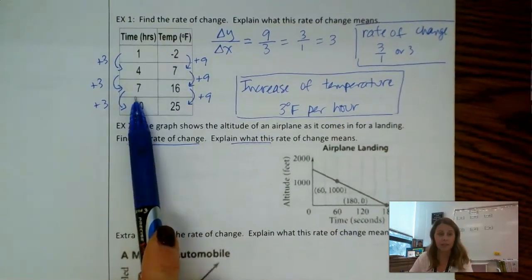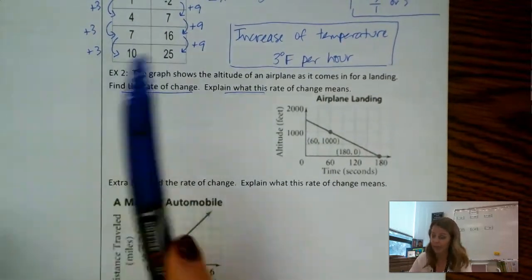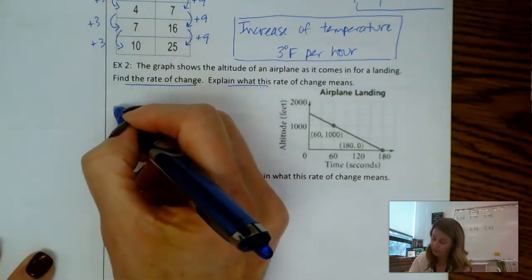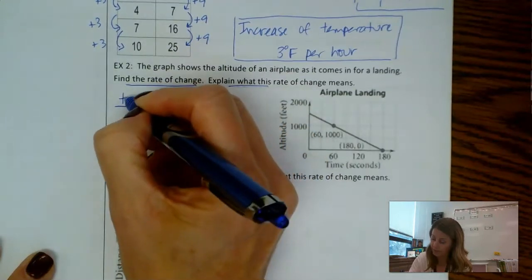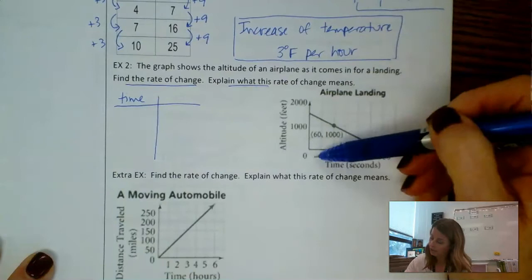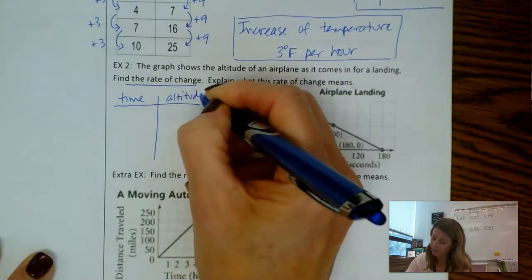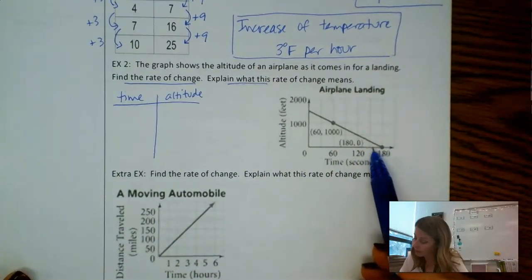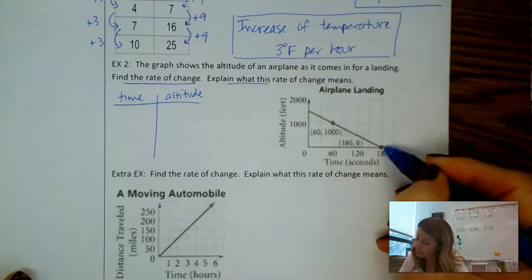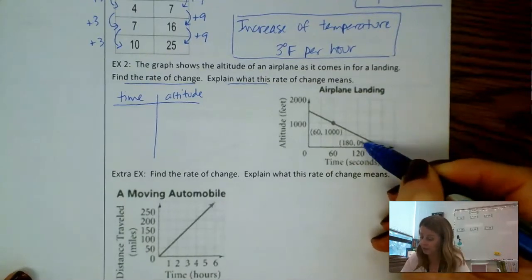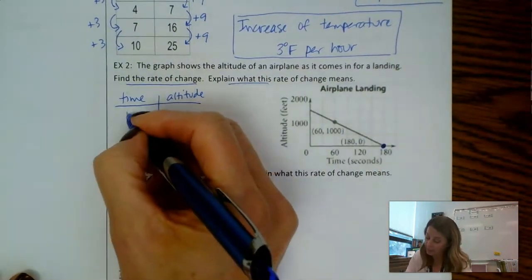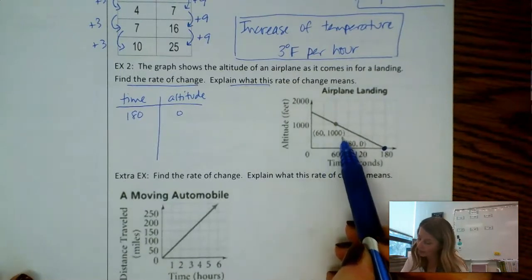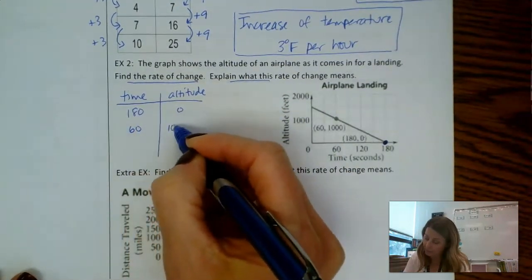So I'm going to line up my independent and dependent variable kind of like an x and a y. So my time is like my x variable or my independent. So let's make a little t chart here. I'm going to do time, altitude which is in terms of feet. So I can come back to those labels at the end when I explain. So let's list out some ordered pairs here. It looks like 180 comma 0 is this ordered pair right here. So let's add that in 180 and then 0. And then this dot right here is 60 comma 1000.